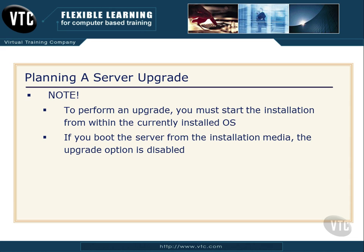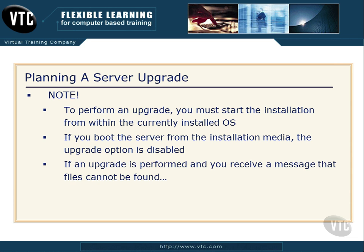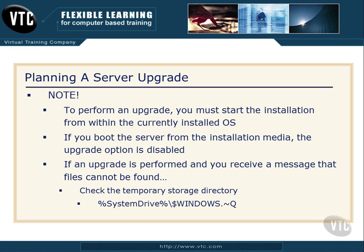So, one more time: to perform an upgrade, you have to start the installation for Windows Server 2012 from within the currently installed operating system. Then, last but not least, if an upgrade does happen — you get the report, everything's cool, you do the upgrade — and then later when you're trying to do something and you get a message that some files cannot be found, you can go check the temporary storage directory. It's in the system drive, then in the hidden file dollar windows, and then the little curly Q, and then actually the letter Q. You can just go look around, or better yet, go look on Microsoft's site for the temporary storage directory if you get lost.